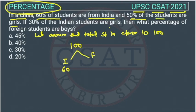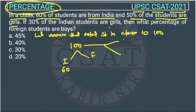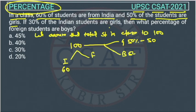Now 50% of the students are girls, so out of 100, this 100 is divided into boys and girls. 50% girls means 50 are girls, and boys are also 50.